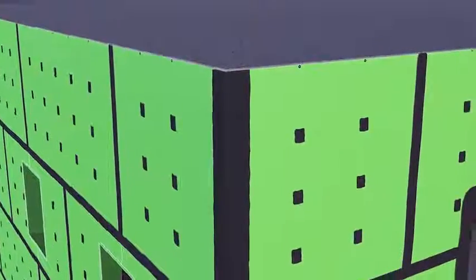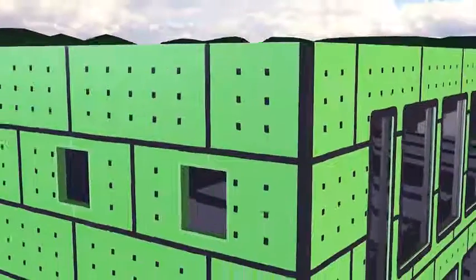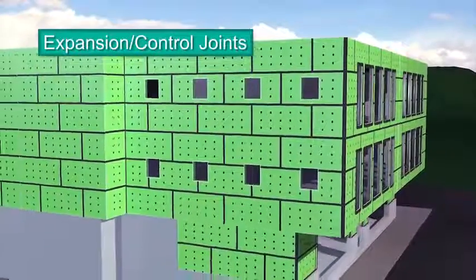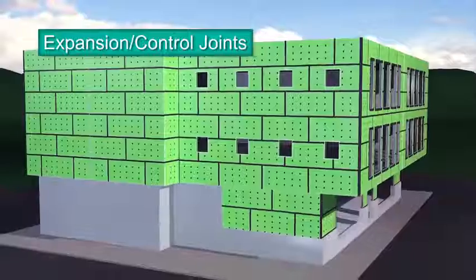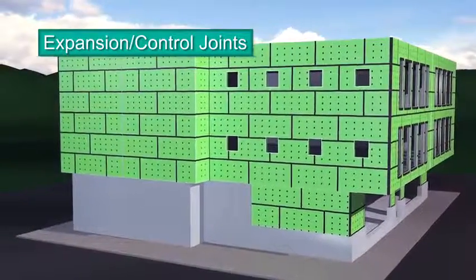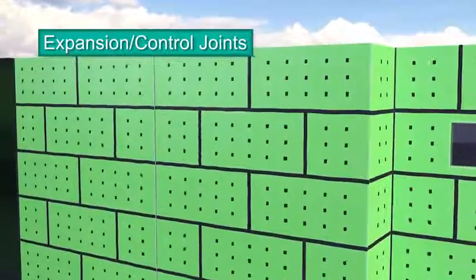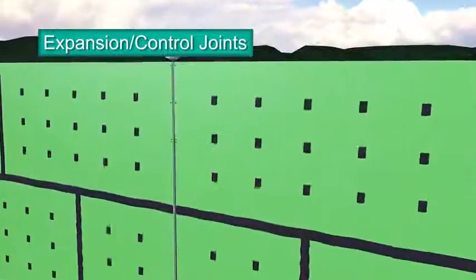Expansion joints accommodate inevitable building movement. They're designed to absorb the expansion and contraction of construction materials. Expansion joints have to be detailed because, just like detailing standard board joints, it is required for continuity of the air barrier system.